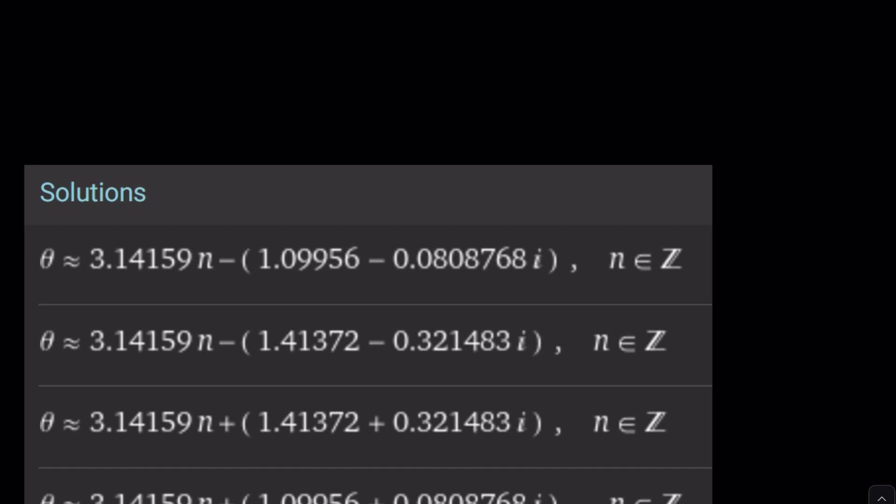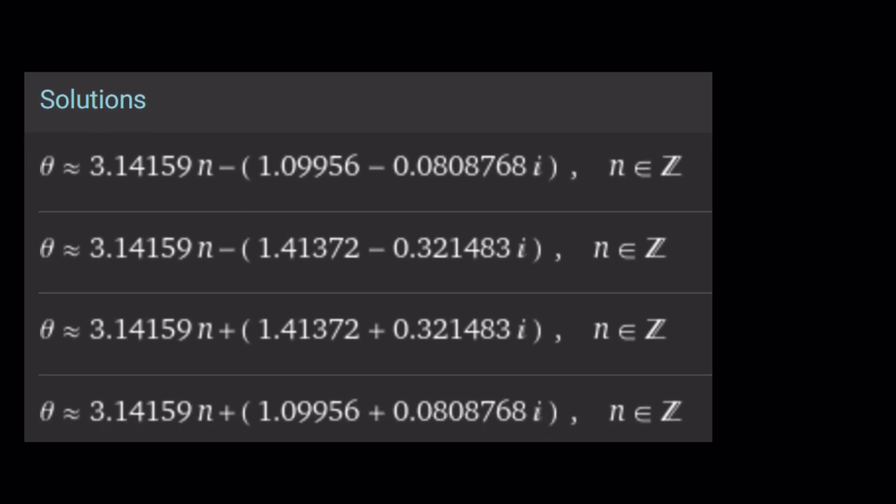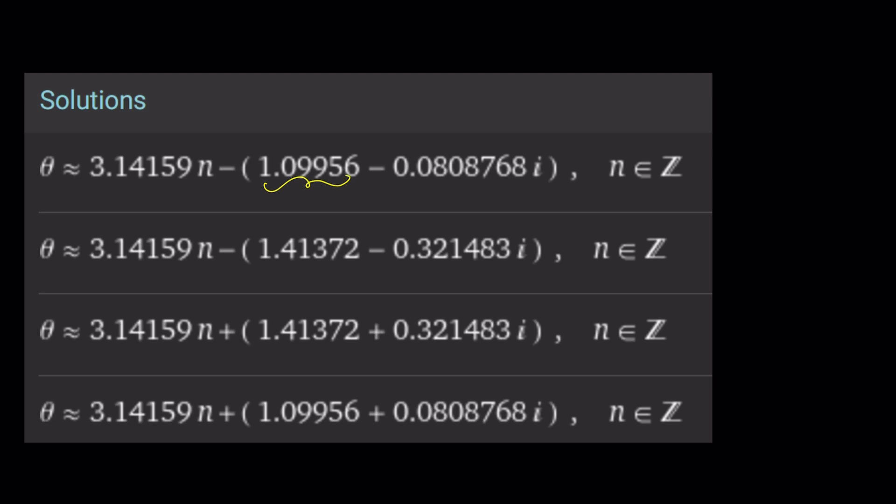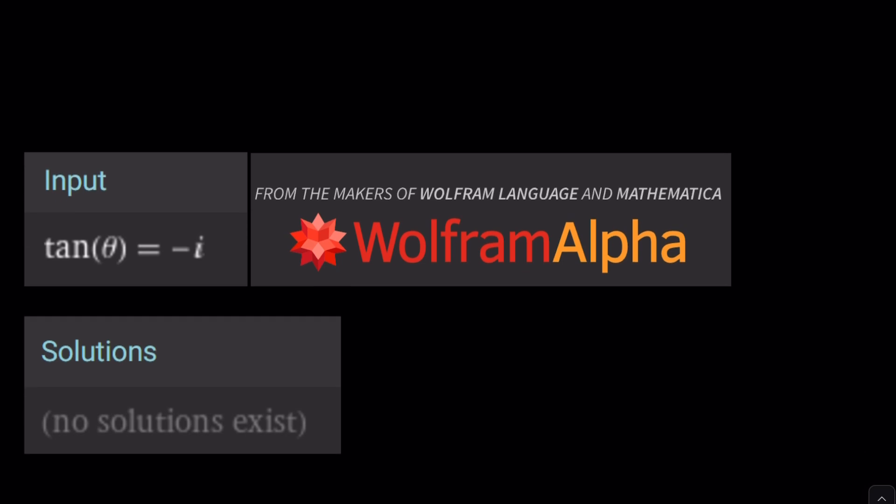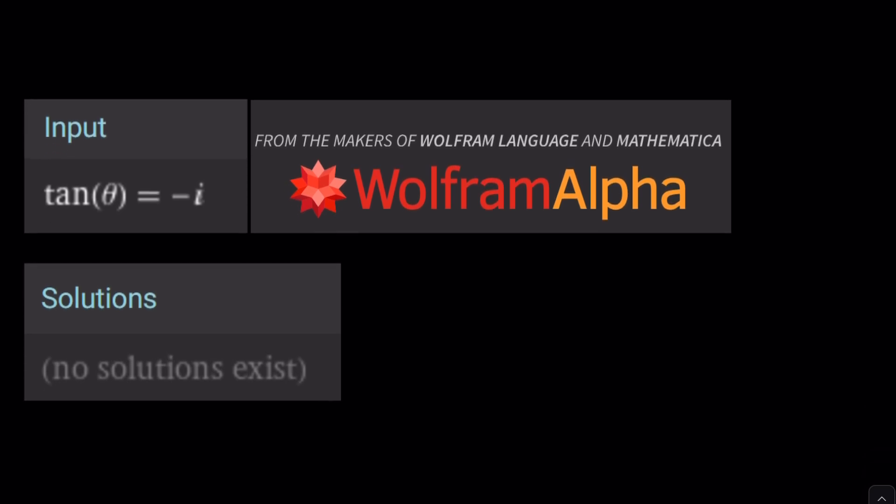But let's check with Wolfram Alpha. We got solutions. Where do they come from? I don't know. Maybe you'll answer that question because I'm not sure. You could hopefully tell me why Wolfram Alpha thinks these are solutions. By the way, this is pi. If you look at the details, it says for tangent theta equals negative i, no solutions exist. Of course, that's the truth.